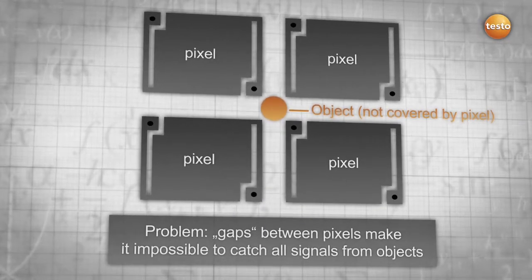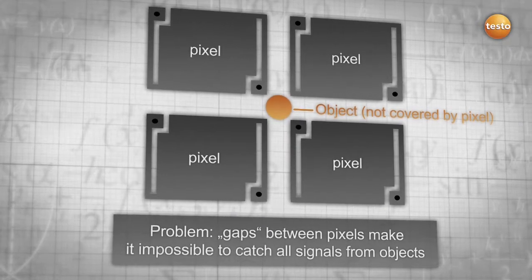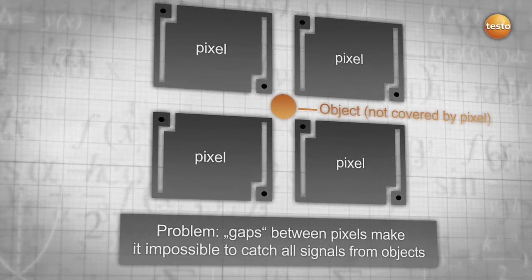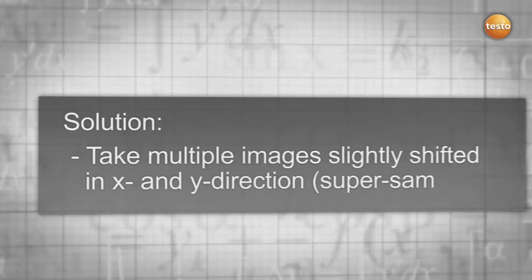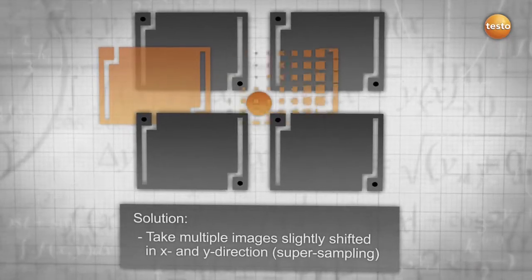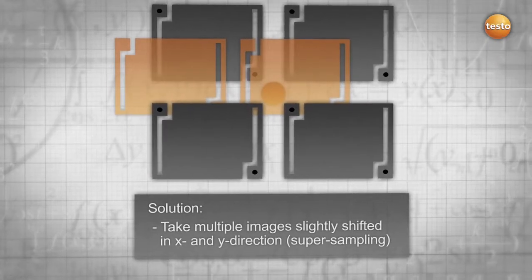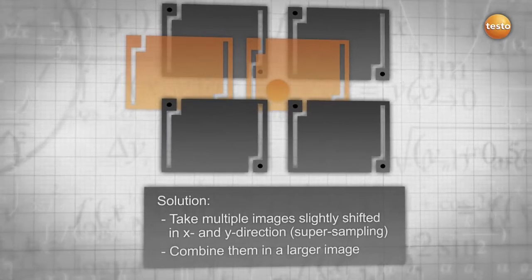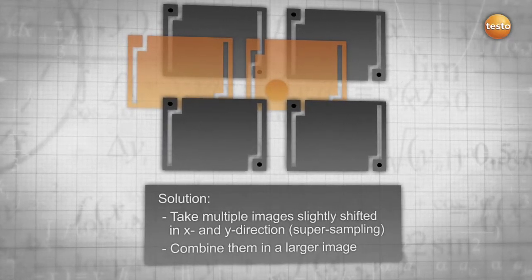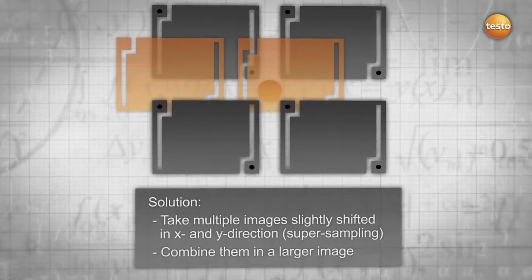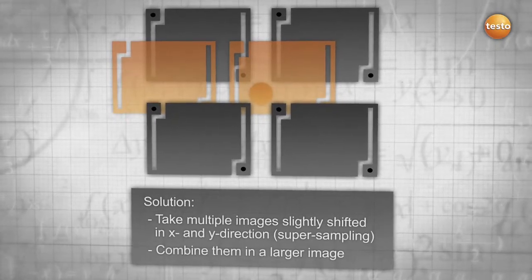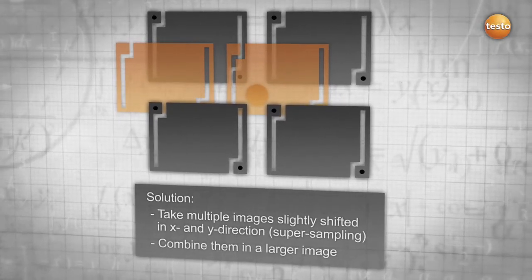One of the main problems with detectors are the gaps between each pixel. Through these gaps, it is almost impossible to catch all signals emitted by objects laying in between pixels. Supersampling provides a solution to this problem. Since the advanced technology takes multiple images, slightly shifts them and combines them into one larger image. This technology enables you to record more signals and results in more accurate measurement and more pixels.